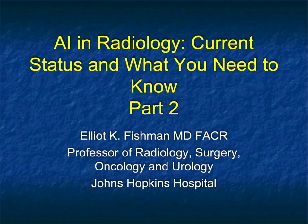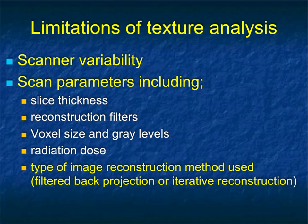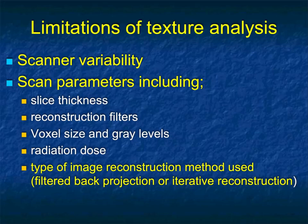Hi, this is Elliot Fishman. Let's do part two of current status of AI: what you need to know. Remember in the last talk I gave you some really good results on radiomics — I showed you its ability to detect pancreatic cancer with a high degree of accuracy, distinguish cancer from normal gland, and showed you some work we're doing which allows you to grade neuroendocrine tumors.